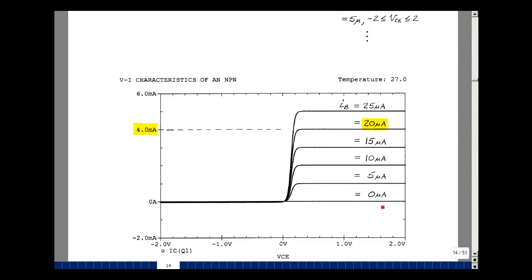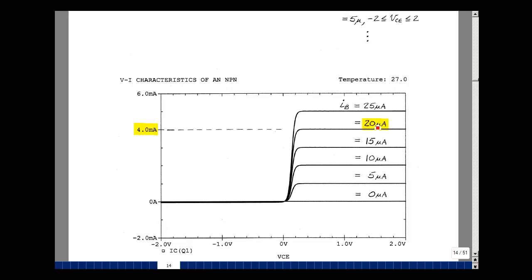Here's the first curve here, then five microamps, then 10, 15, 20, and then 25. Four milliamps is the case where I sub b is equal to 20 microamps. Remember that the ratio of IC to IB in the active region is beta f, so that's exactly what that is. It's 200.